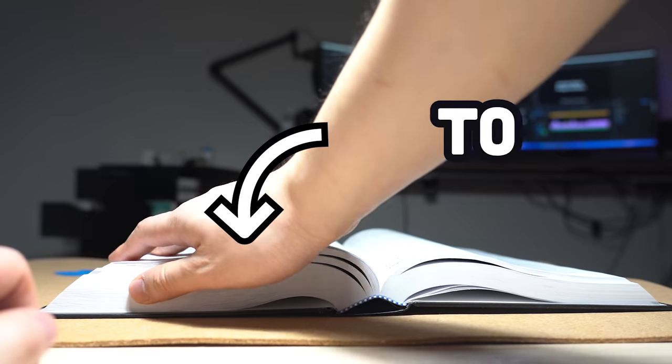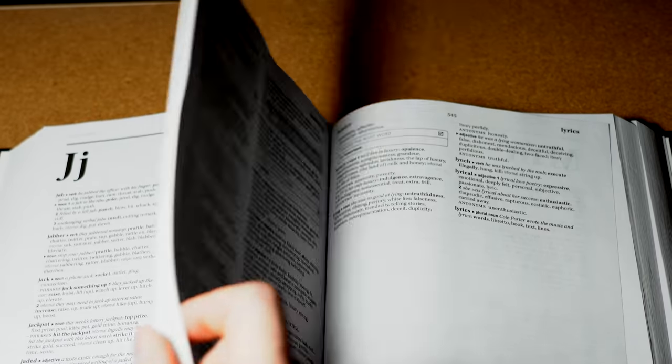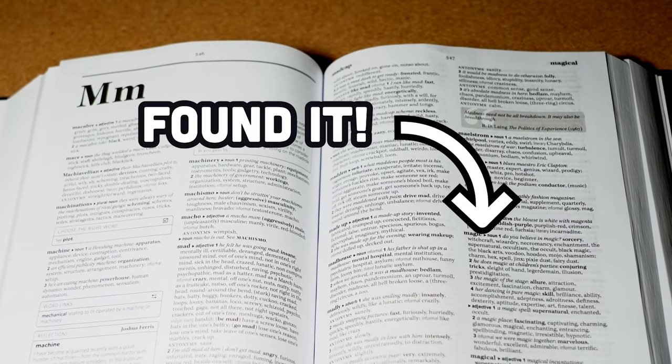If you overshoot to the Q's, then you go to the middle of that chunk. This time, you undershoot to the J's, so you do the same thing again, but in the other direction. Until finally, you find the page you're looking for.